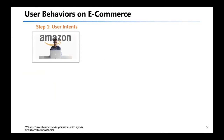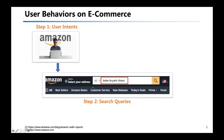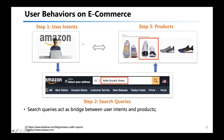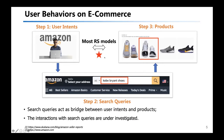Let us quickly review the user behaviors on e-commerce and how recommender systems work. Users have their own intents and type search queries to describe their latent intents. The search engine can return a list of relevant products, and users can perform various interactions on the products in the list. Through this process, the search engine acts as a bridge connecting the users and the products. However, most existing recommender systems try to directly model the relevance and interactions between users and products, and largely ignore the role of search queries.